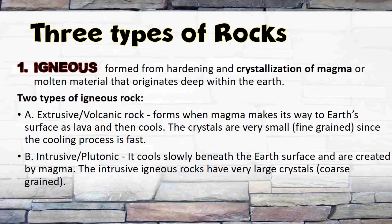Three types of rocks. Igneous: formed from hardening and crystallization of magma or molten material that originates deep within the earth. Two types of igneous rock: A. Extrusive or volcanic rock — forms when magma makes its way to earth's surface as lava and then cools. The crystals are very small, fine-grained, since the cooling process is fast. B. Intrusive or plutonic — cools slowly beneath the earth's surface and is created by magma. Intrusive igneous rocks have very large crystals, coarse-grained.